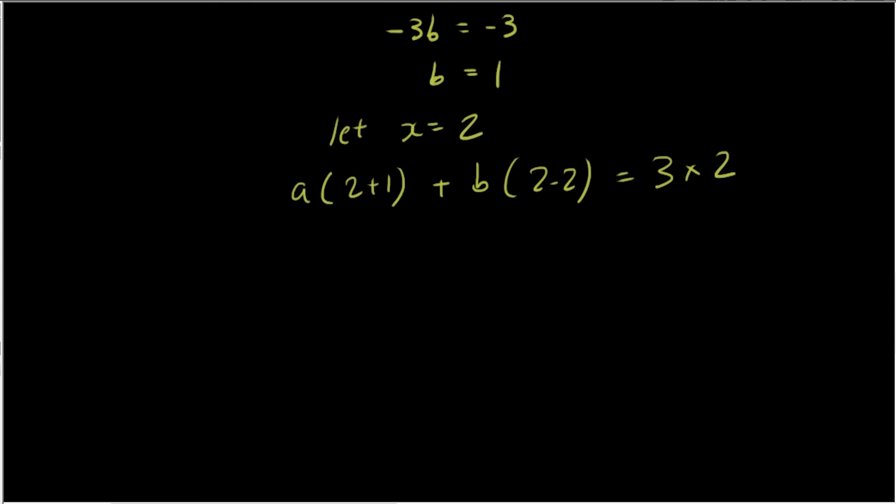So now I have 3a + 0b = 6. So 0b is gone, obviously 0 times b is 0. So 3a = 6, a = 2. 3 times 2 is 6. Very good.